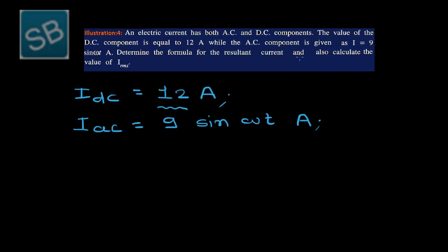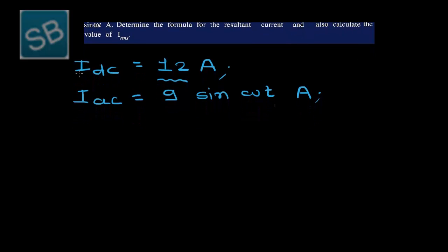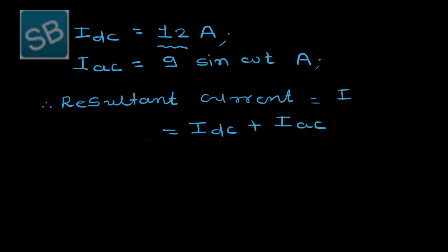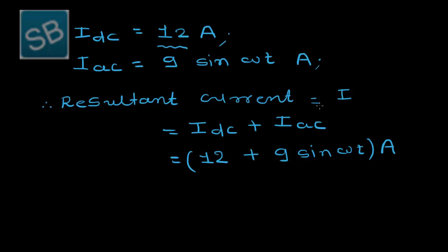We have to determine the formula for the resultant current. The resultant current is given by the addition of the DC component and AC component: I equals IDC plus IAC, which equals 12 + 9 sin(ωt) ampere. This is the resultant current equation.